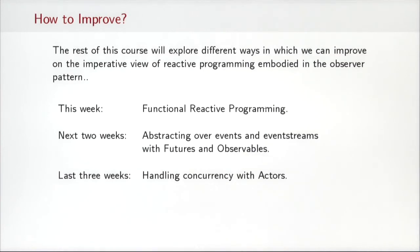So in the rest of this course, we'll explore different ways in which we can improve on the imperative view of reactive programming that's embodied in the observer pattern. In this week, we are going to look at functional reactive programming as an alternative to treat these event sequences in a functional way. In the next two weeks, then, we will look at related but different ways of abstracting over events and event streams with futures and observables. And in the last three weeks of this course, we will tackle concurrency head-on. We will express concurrency and handle it using actors.